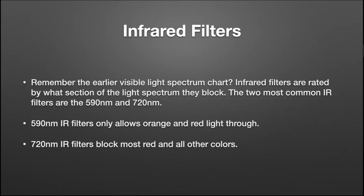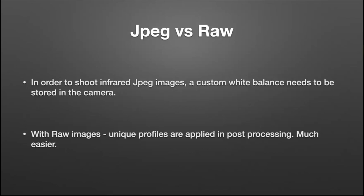The two most common infrared filters are the 590 and 720. The 590 only allows orange and red light through; the 720 nanometer blocks both red and all other colors. For the first couple of years I was mostly using 720. One other thing: shoot RAW. If you want to shoot JPEG on an infrared camera, you also have to insert a custom white balance within the camera, then use that custom white balance when shooting photos. With RAW it's easier — unique profiles are added after in post-processing.